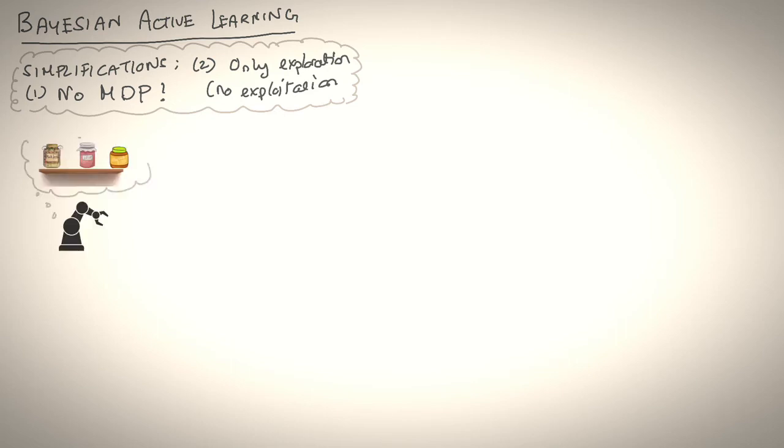First, there's no MDP. There's no notion of state. And second, it's only concerned with exploration. In other words, reducing uncertainty. To understand this better, let's slightly modify our problem. Let's say the goal of the robot was to simply identify which jar the human wanted.